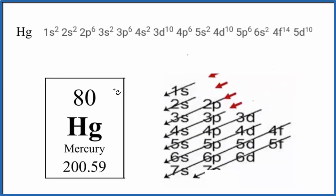In this video we're going to write the electron configuration for Hg. This is mercury. We'll also write the electron configuration for the mercury 2 ion, Hg2+.